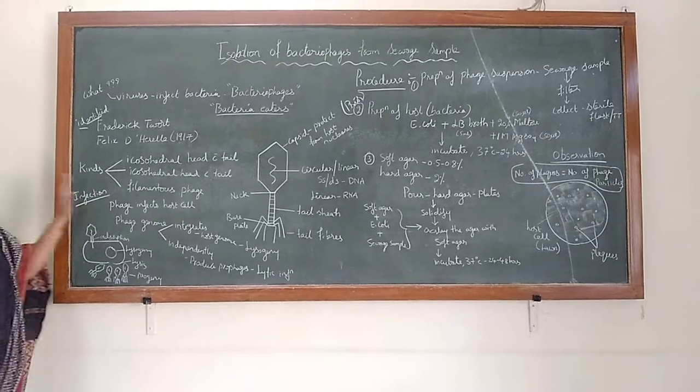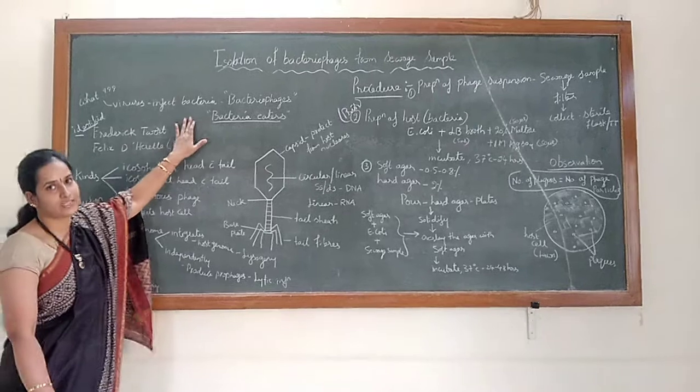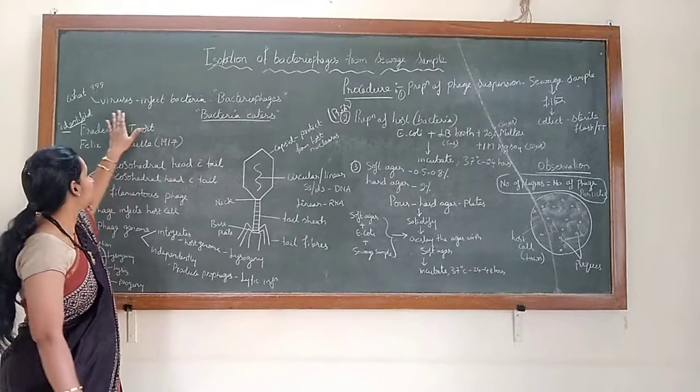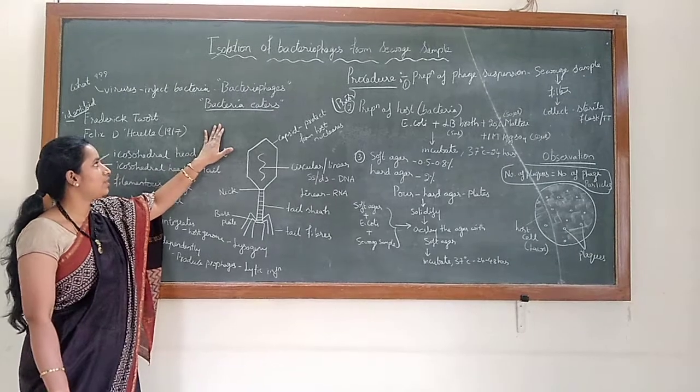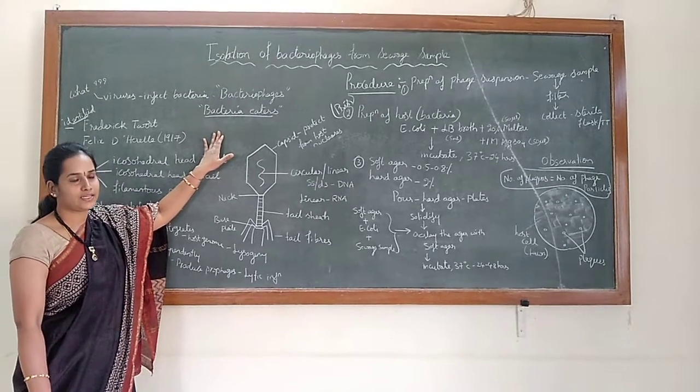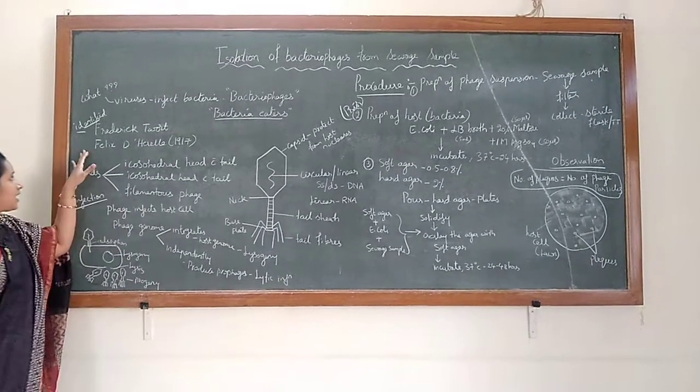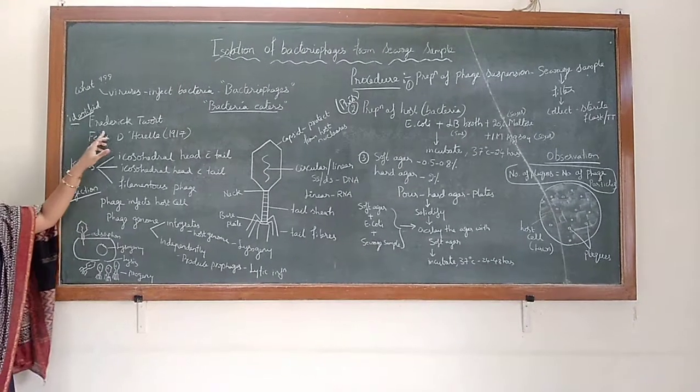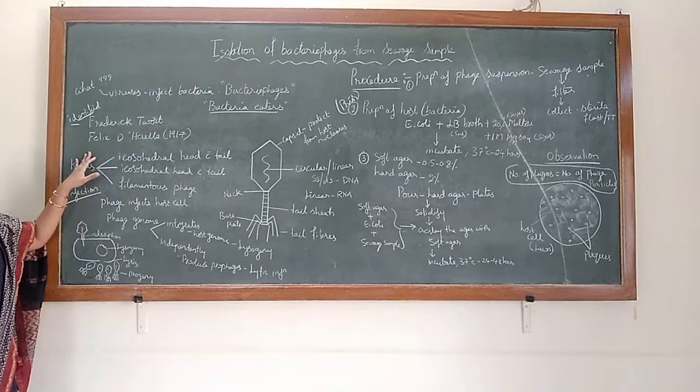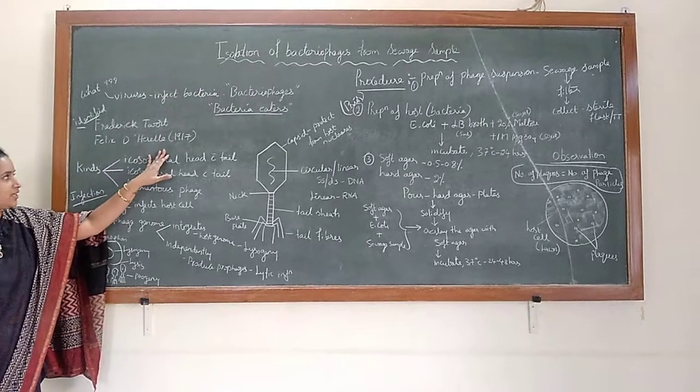Simply we can define them as viruses which infect the bacteria, or we can call them bacteria eaters. These were first identified and described by the scientists Frederick Ford and Felix B. Harrell in the year 1917.